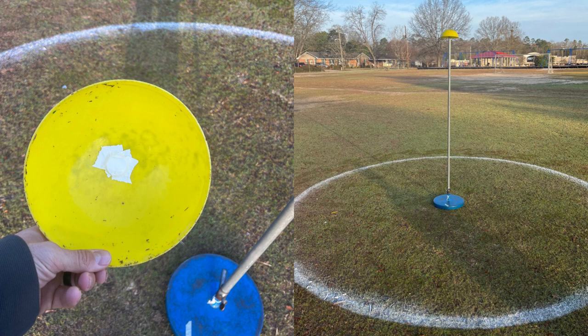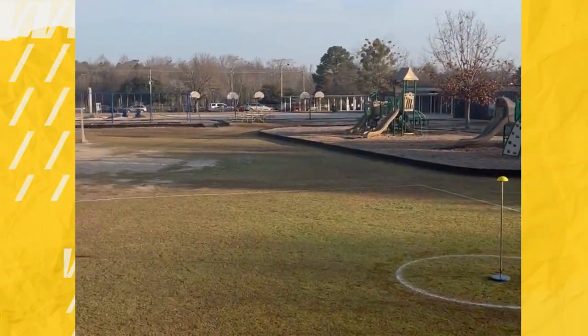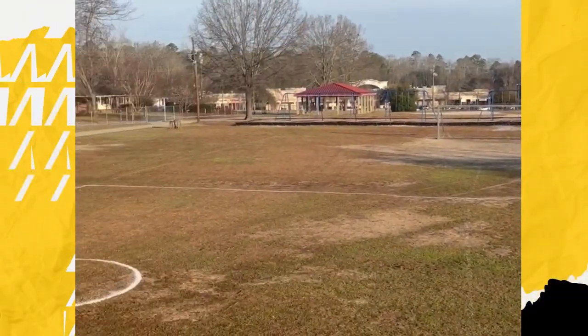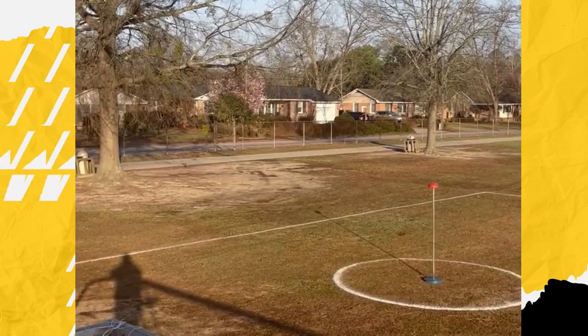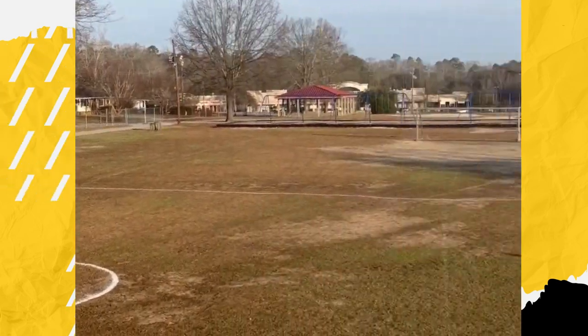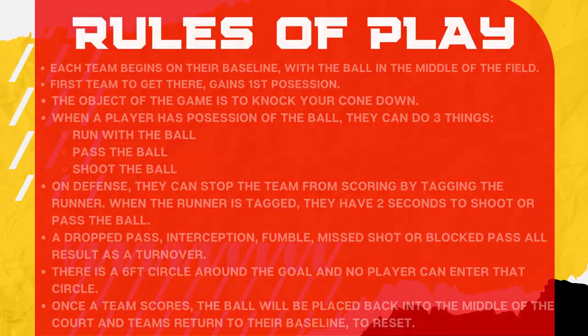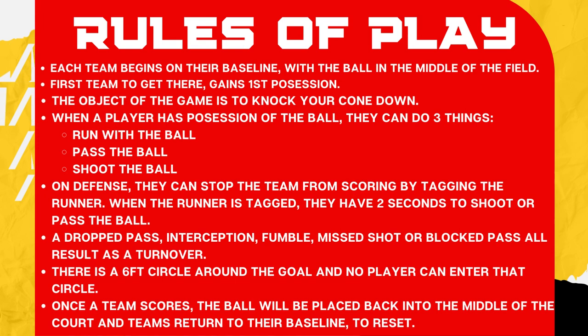We took some field paint, attached a string to it, and made a six-foot diameter circle. We did two six-foot diameter circles and got our field marked off with paint. Now, how do you play angle ball? What are the rules?